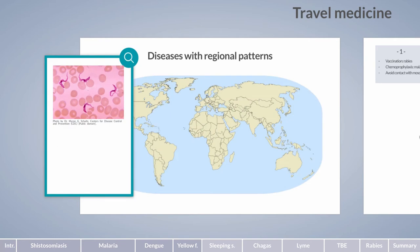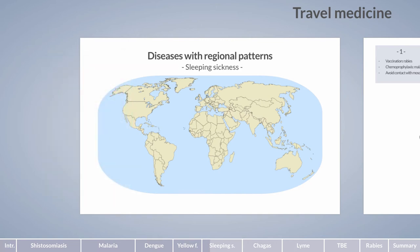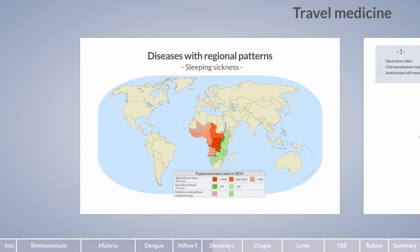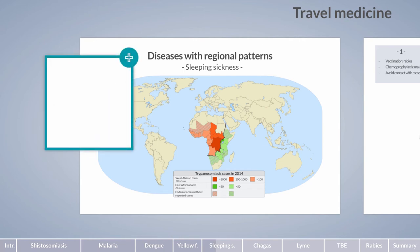The protozoan parasite Trypanosoma brucei is restricted to sub-Saharan Africa, giving rise to a disease best known as sleeping sickness or African trypanosomiasis. The parasites are transmitted by the tsetse fly. There are two forms: the West African form and the East African form, designated by their geographic distributions. Patients initially present with painful red swelling at the bite site, followed by a hemolymphatic phase with intermittent fever, lymph node swelling, anemia, and immune reactions affecting the central nervous and cardiac systems.